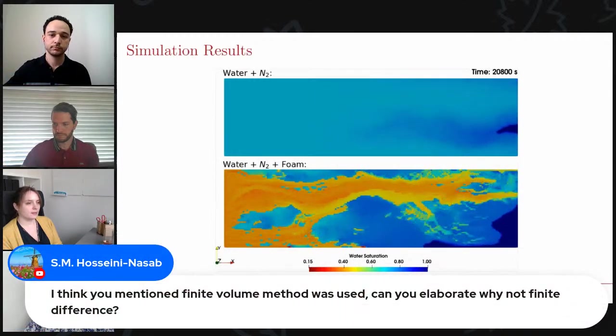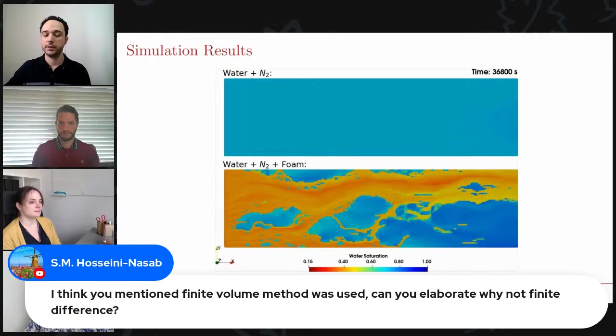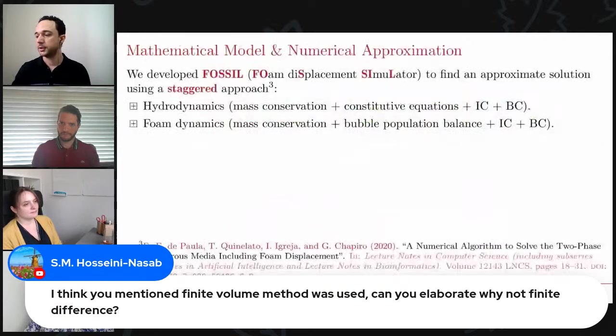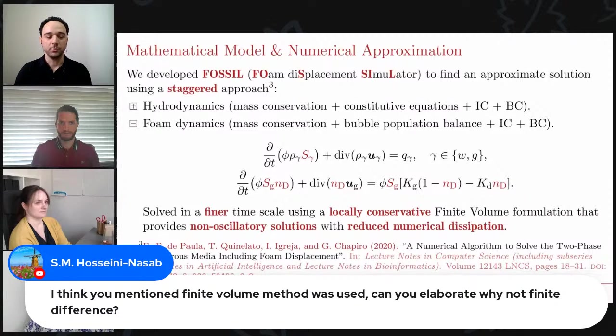There is one more question by Hossein Ninasab. I think you mentioned finite volume method was used. Can you elaborate why not finite difference? Oh, okay. Yes. The finite volume method was used for the hyperbolic part of the problem. And it's basically because we wanted to use a flexible framework for locally conservative numerical methods. And I believe that they are interchangeable, right? We can rewrite a finite volume formulation in the form of a finite difference formulation. And it was just the way we would like to implement this numerical method.